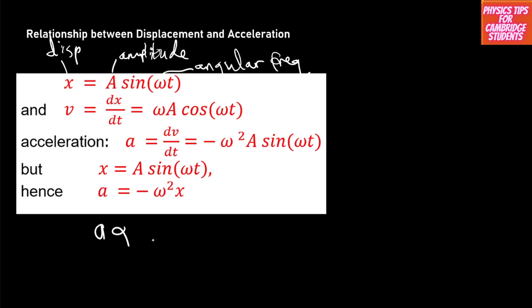The acceleration is directly proportional to the displacement, and the acceleration and displacement are in opposite directions. This is the definition for simple harmonic motion. Looking at the relationship between displacement and velocity: displacement is a sine function and velocity is a cosine function, so these two graphs are pi over 2 radians out of phase with each other — sine and cosine are separated by 90 degrees.